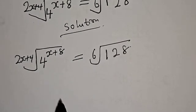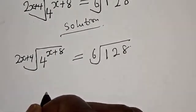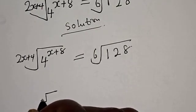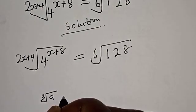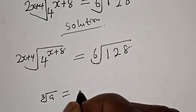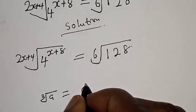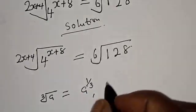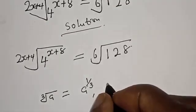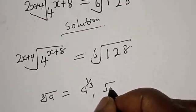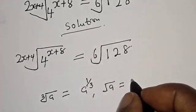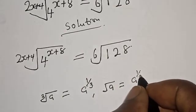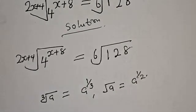Note that if you have the kth root of a, this is the same thing as a raised to power 1 over k. And if you have the square root of a, this is equal to a raised to power 1 over 2.